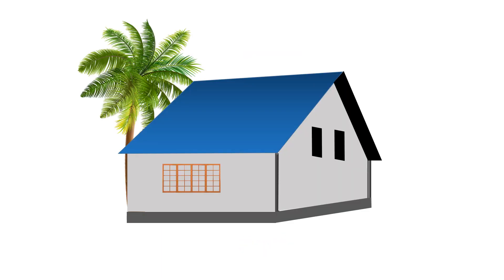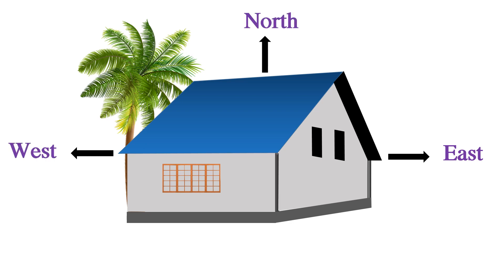Here you observe one picture of a house. How do we find what is East and what is West? We stand before the house or picture. Our right side is East, our left side is West direction. The top portion or top direction is North direction, and the bottom is South direction.